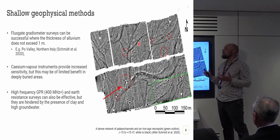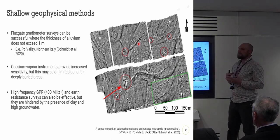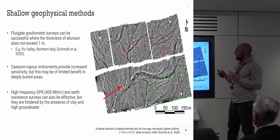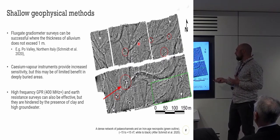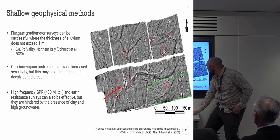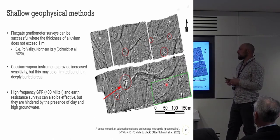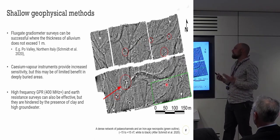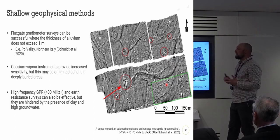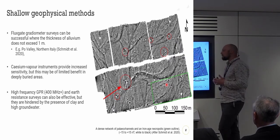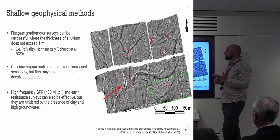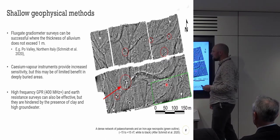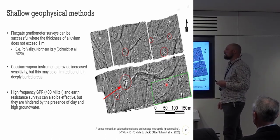We can also use a whole range of geophysical methods. Having said that conventional forms of prospection such as gradiometer survey are relatively ineffective, where the alluvium doesn't exceed one metre — such as this example in the Po Valley in northern Italy — it can be really effective. You can see the clear designation of an Iron Age necropolis among a dense network of paleo-channels. Similarly, caesium vapour instruments may provide some increased sensitivity in this setting, but in deeply buried areas they're still unlikely to be effective. We can also use GPR and earth resistance surveys, but they're hindered by the presence of clay and high groundwater content.